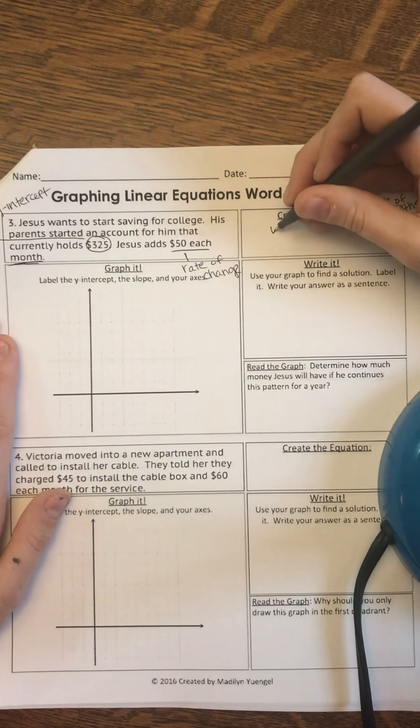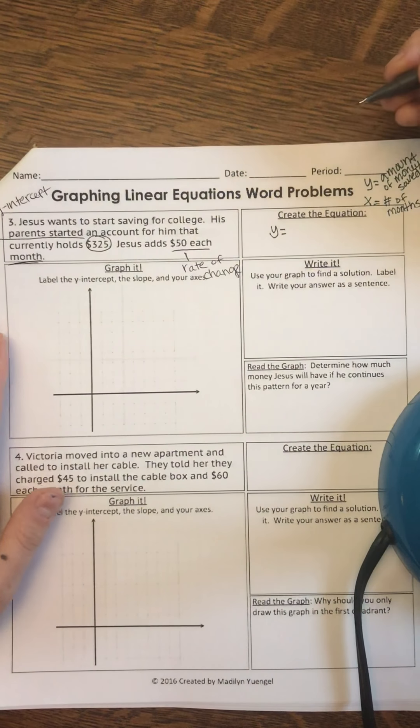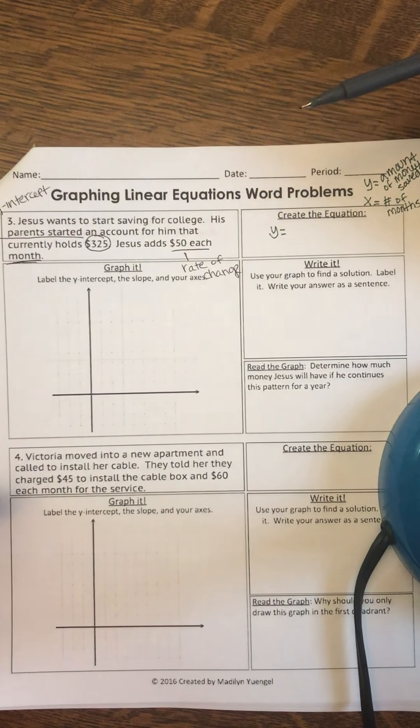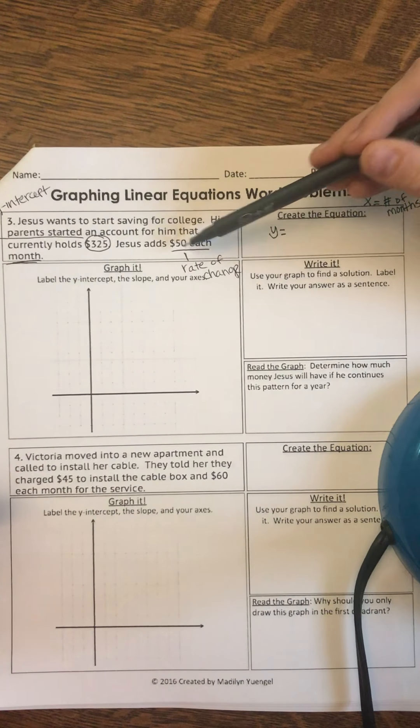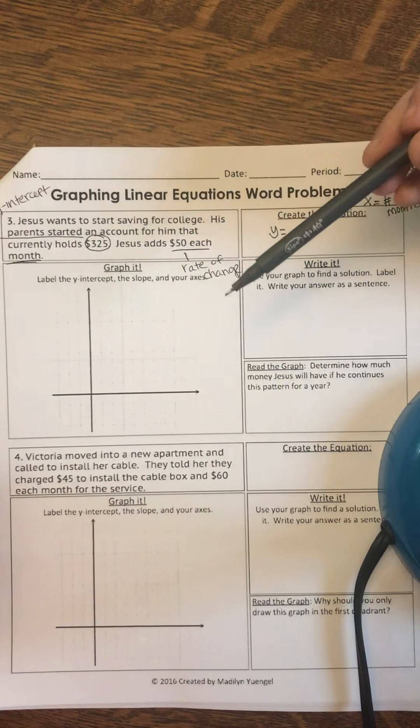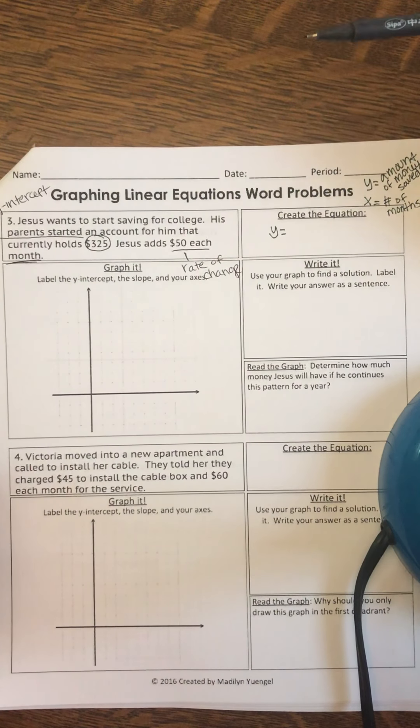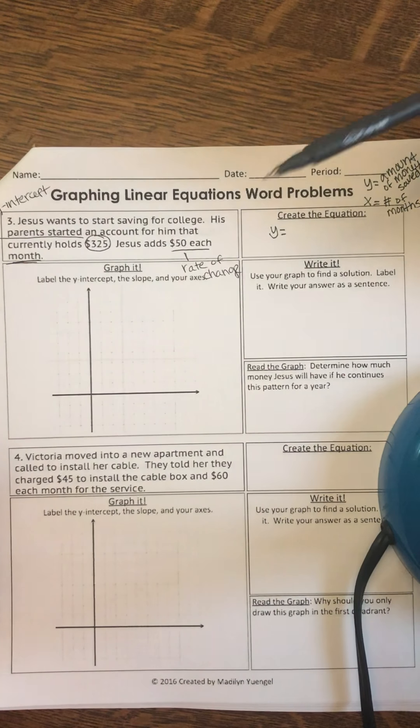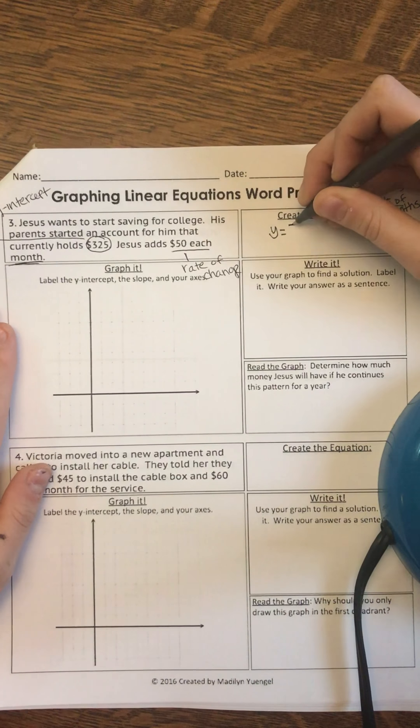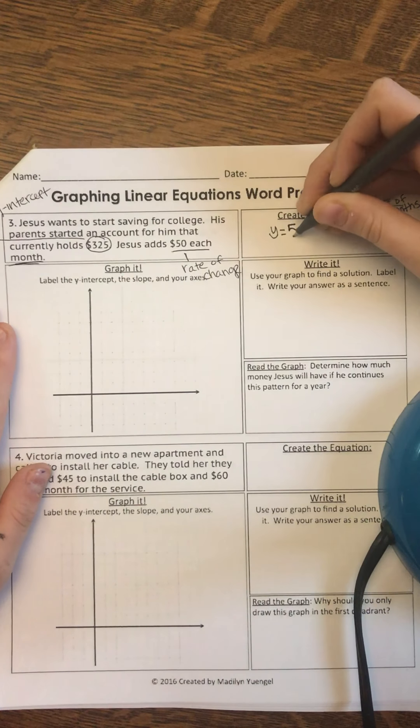So let's create our equation. Y is the amount of total money he's saved. And then what is the rate of change? $50 each month. That is the amount of money changing each month. He's getting $50 more, which is fabulous. The phone is ringing, we'll ignore it. We're going to keep going. $50 each month, so then it's 50X.